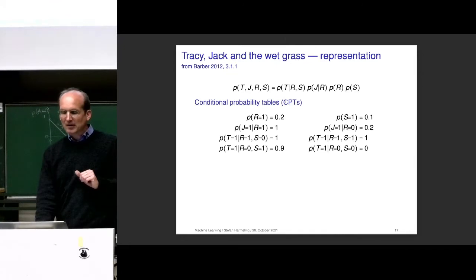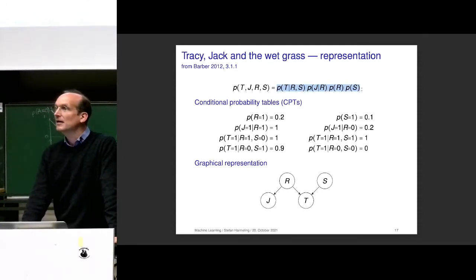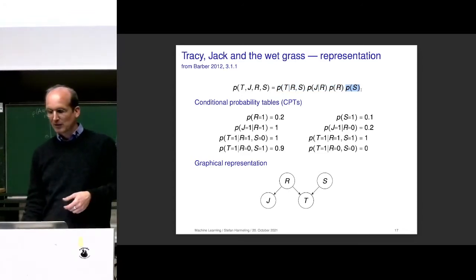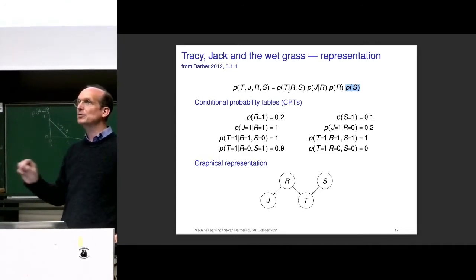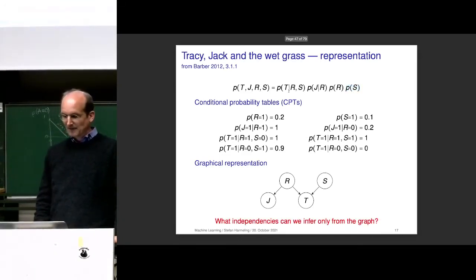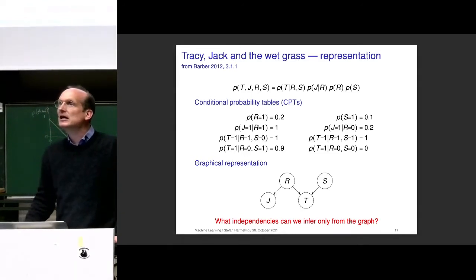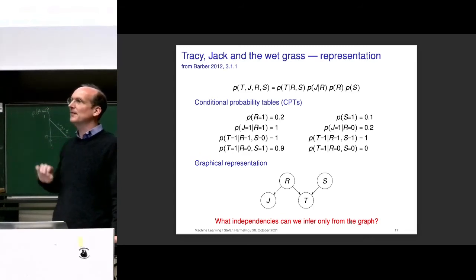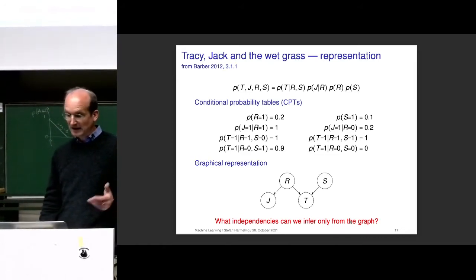Let's get back to our sprinkler example. That was a setup we got from our domain experts as a useful factorization — we know something about the probability of setting up a sprinkler, about P(R), etc. If we used a different variable ordering, we'd get a different factorization, but it might be very hard to come up with the proper probabilities from the domain expert. Given this graph, could we now use the notions of independence and conditional independence more precisely? And the answer is yes.